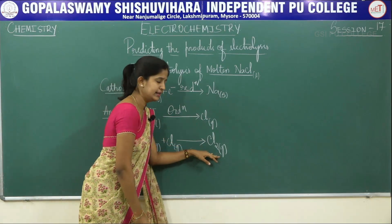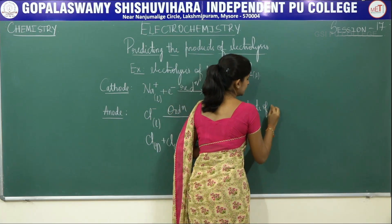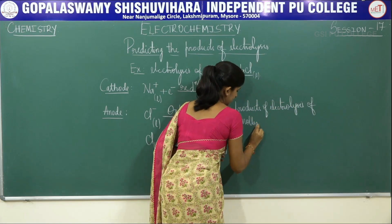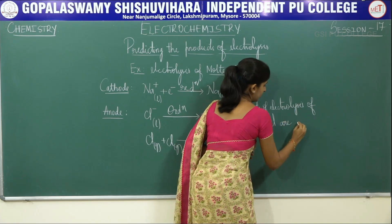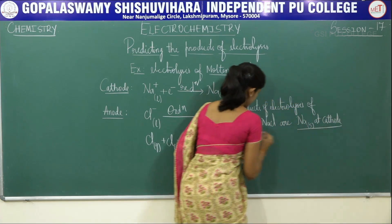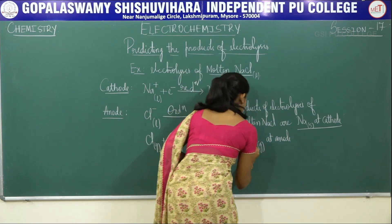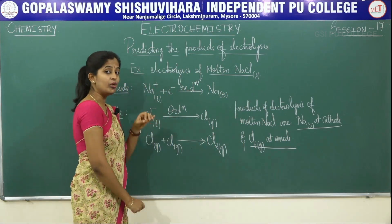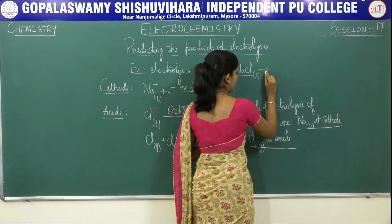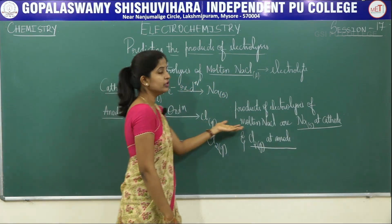At anode, chlorine gas is liberated. Therefore, the products of electrolysis of molten NaCl are metallic sodium at cathode — very important — and chlorine gas at anode. Here there is no any other species present in your electrolyte. Since molten NaCl is your electrolyte, it is very easy to predict what are the products of your electrolysis.